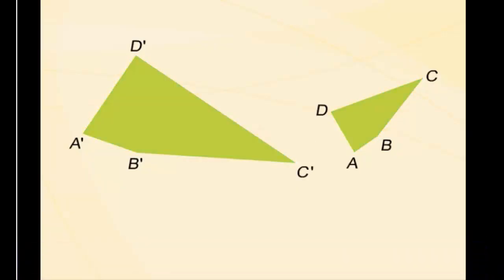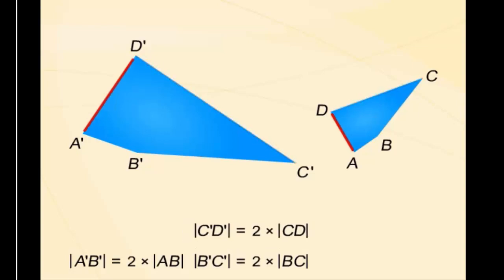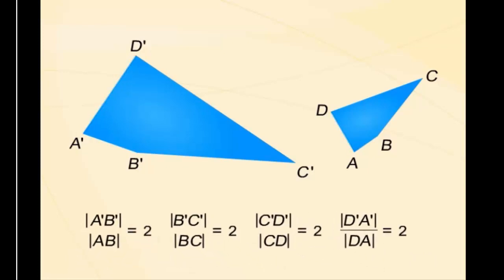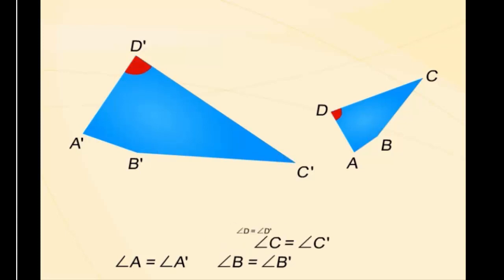Эти многоугольники подобны. Коэффициент подобия K равен 2. Из определения подобия мы получаем следующие свойства. Соответствующие стороны двух многоугольников пропорциональны, и их отношение равно коэффициенту подобия. Следует отметить, что соответствующие углы подобных фигур равны.